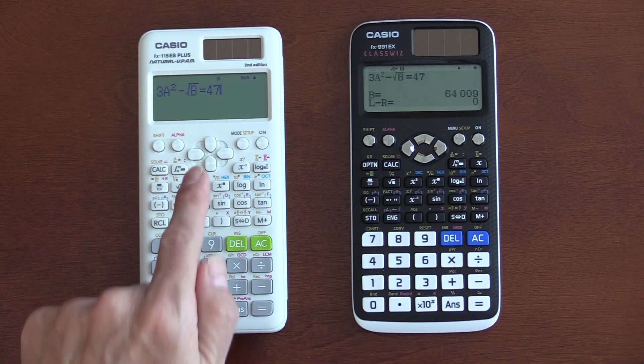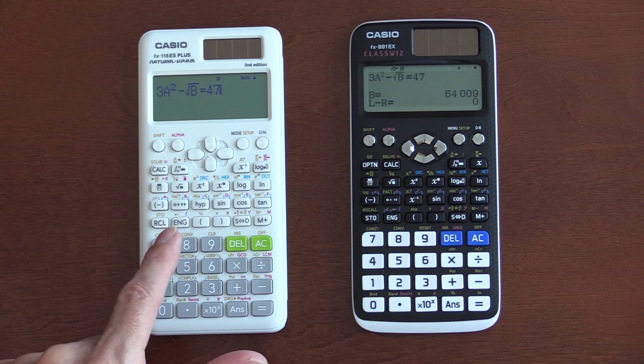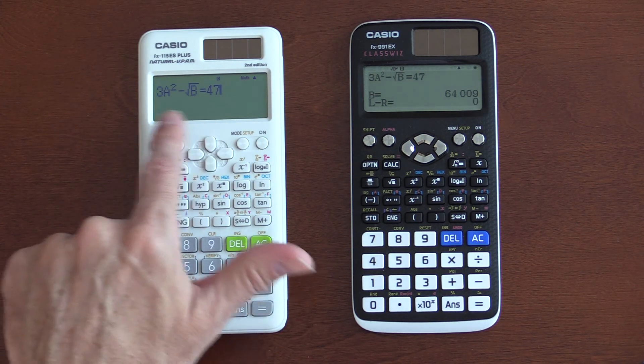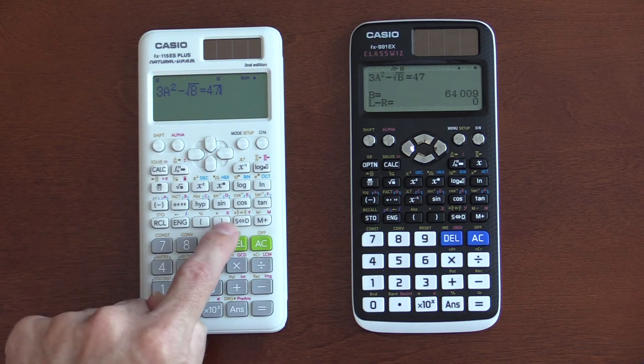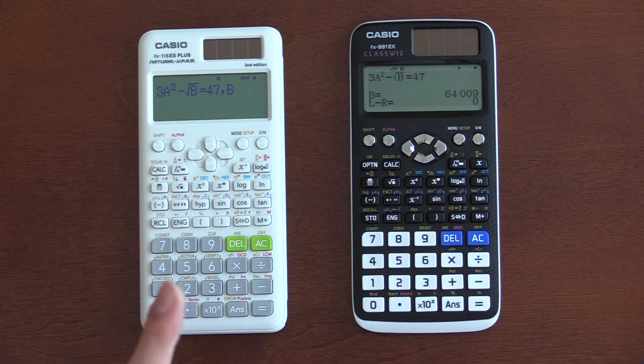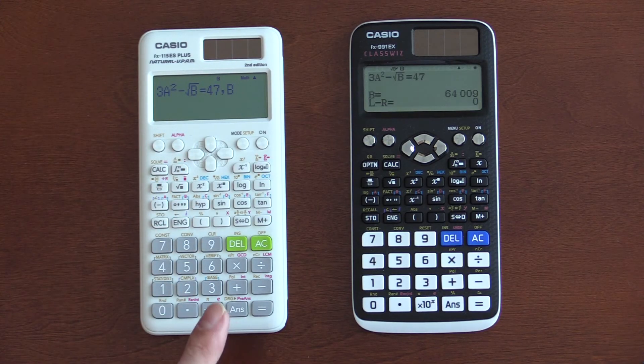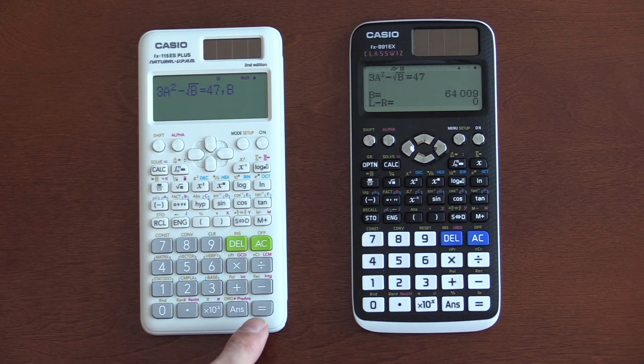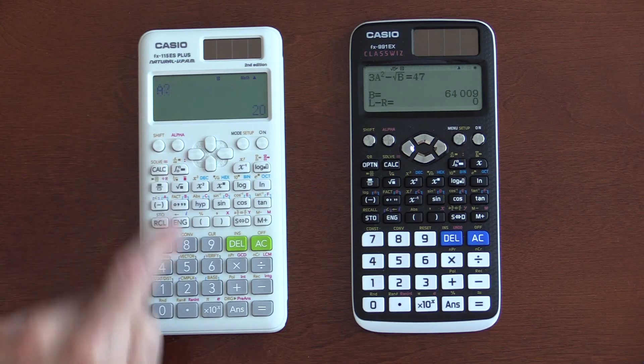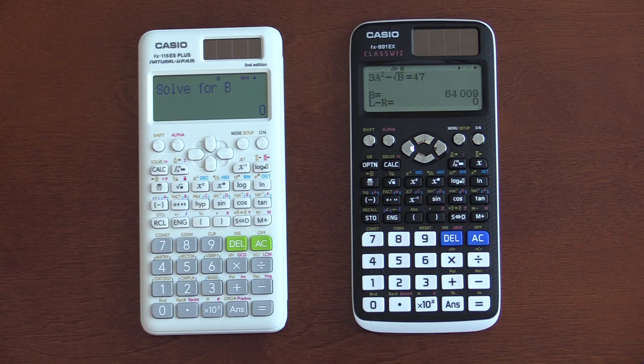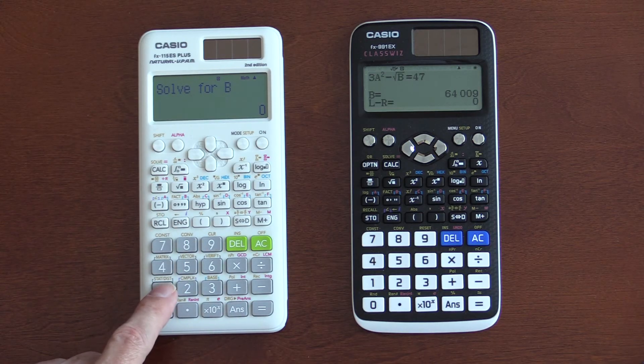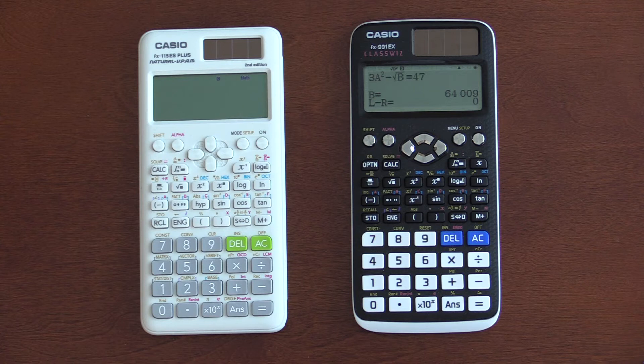On the ES, to solve the same equation for b, you have to tell it what to solve for. It doesn't let you dynamically pick it like it does on the EX. So, I have to do comma, alpha, b. That can throw you for a loop. If you don't do that, you will get an error. And, you'll wonder what's wrong. So, and then I need to do shift solve. It asks me for my a value. I'm going to put in 10 and hit equal. And, give it a guess for b. Takes longer, but gets the answer.